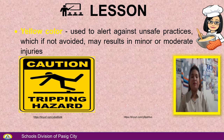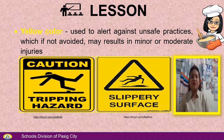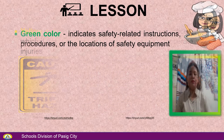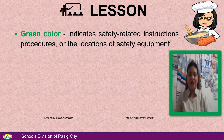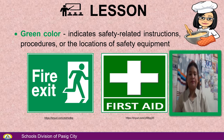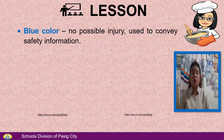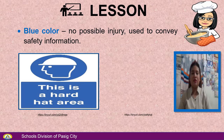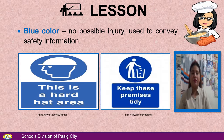Examples of yellow signs include hazard run, creeping hazard, and slippery surface. Green color indicates safety-related instructions, procedures, or the location of safety equipment, such as a fire exit or first aid. Blue color conveys safety information with no possible injury — for example, 'This is a hard hat area' or 'Keep these premises tidy.'